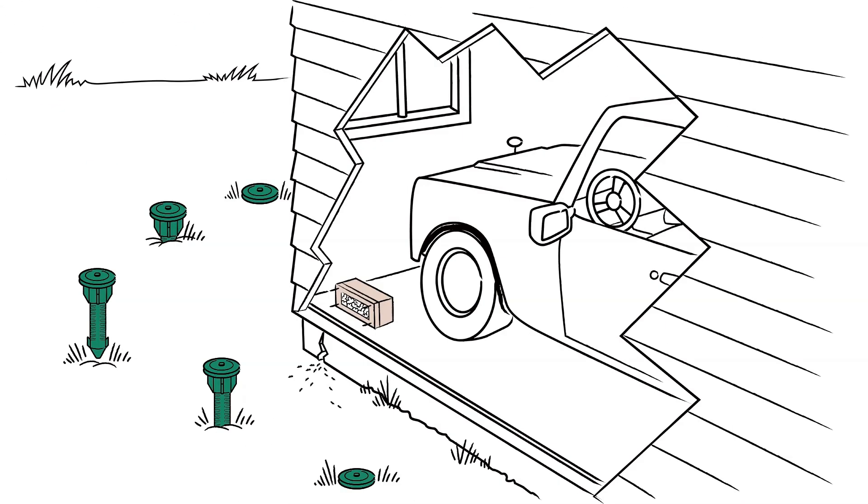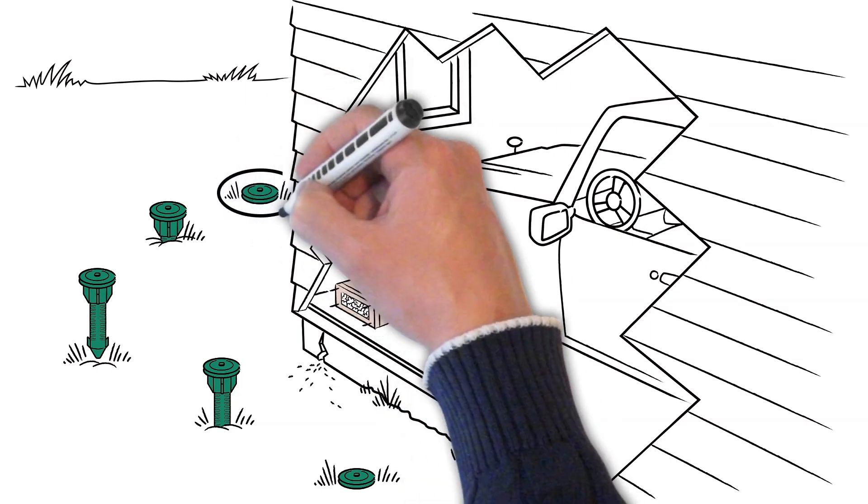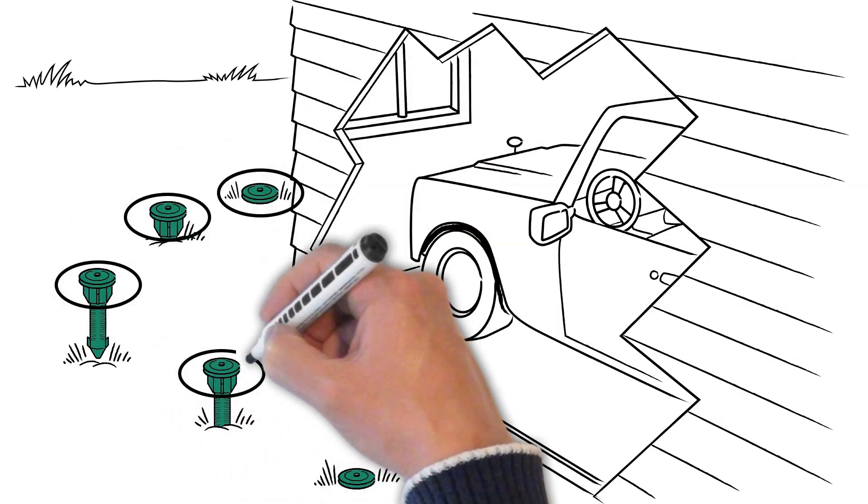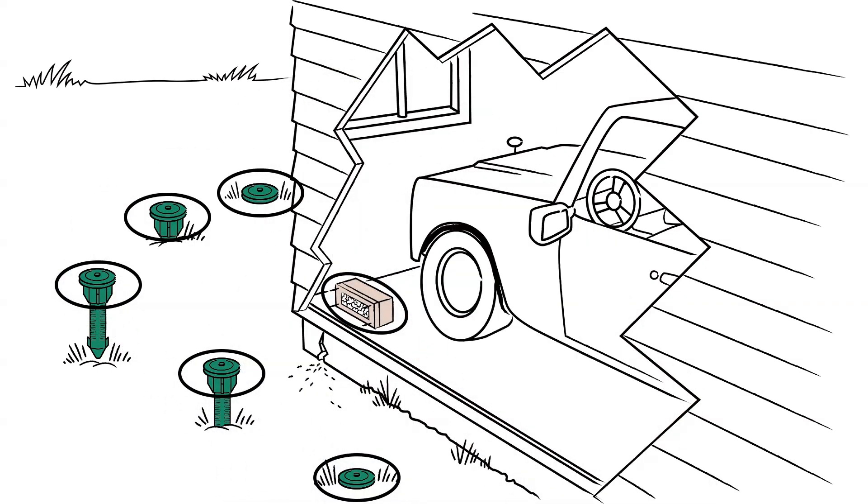The same goes for the thousands of other workers foraging for food. When they feed from Sentricon bait stations, they deliver thousands of deadly doses back to the colony.